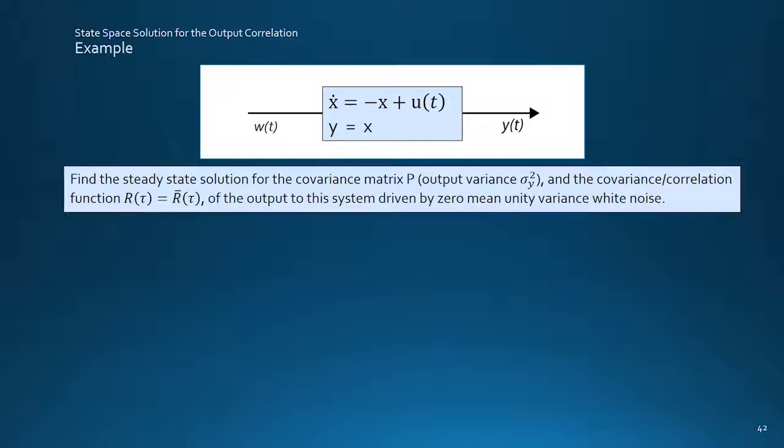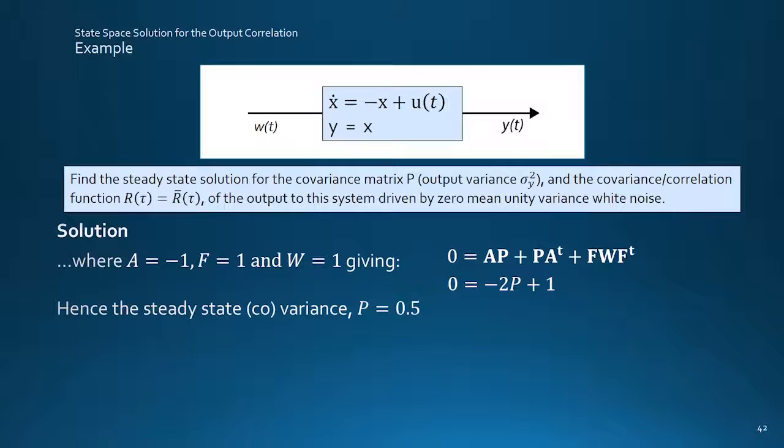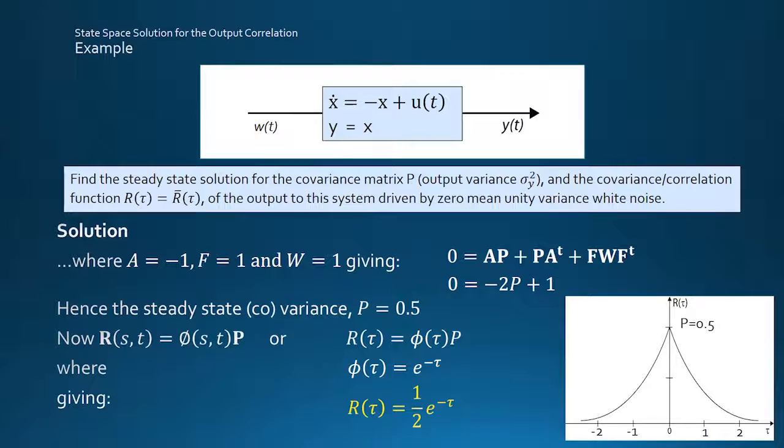Returning to our filter example, to firstly find the steady state covariance matrix, which here reduces to finding the scalar value of the steady state output variance. Plugging the system input and noise strength into the algebraic equation and solving, gives the value of 0.5 for the variance. This is also the zero lag value of the general covariance function found earlier. And in this zero mean case, covariance is equivalent to the correlation function, which is incidentally that of a classic Markov process, with sample values more than 3 to 5 seconds apart being uncorrelated with each other.